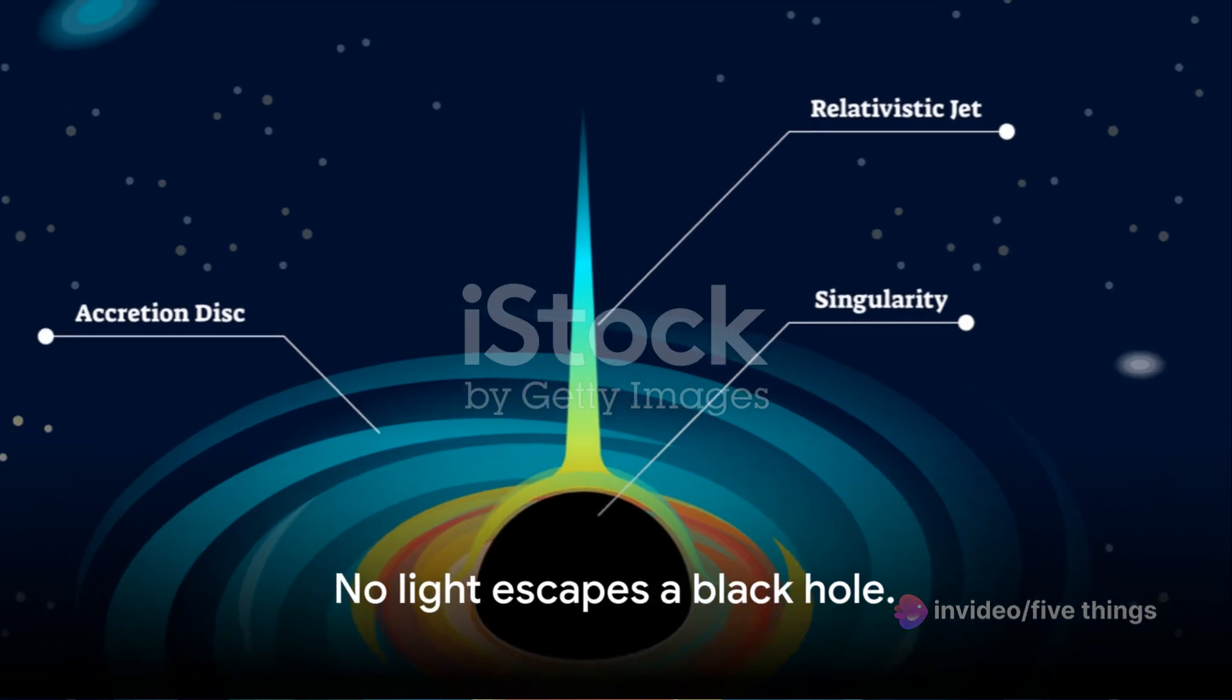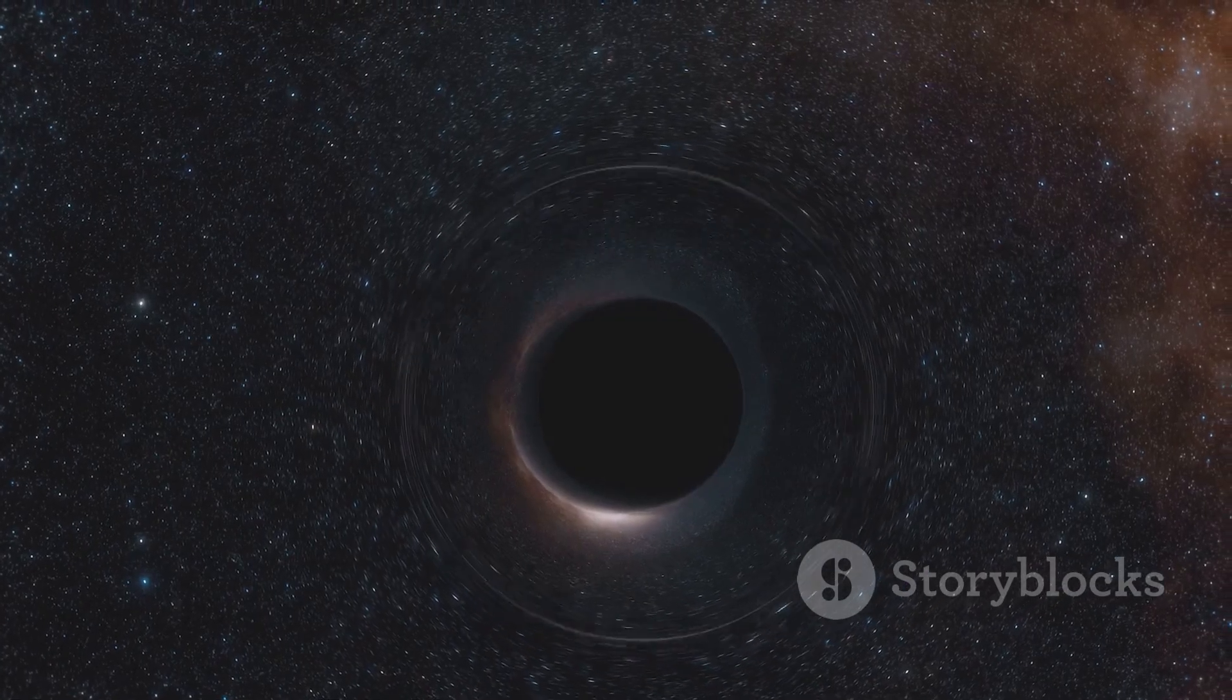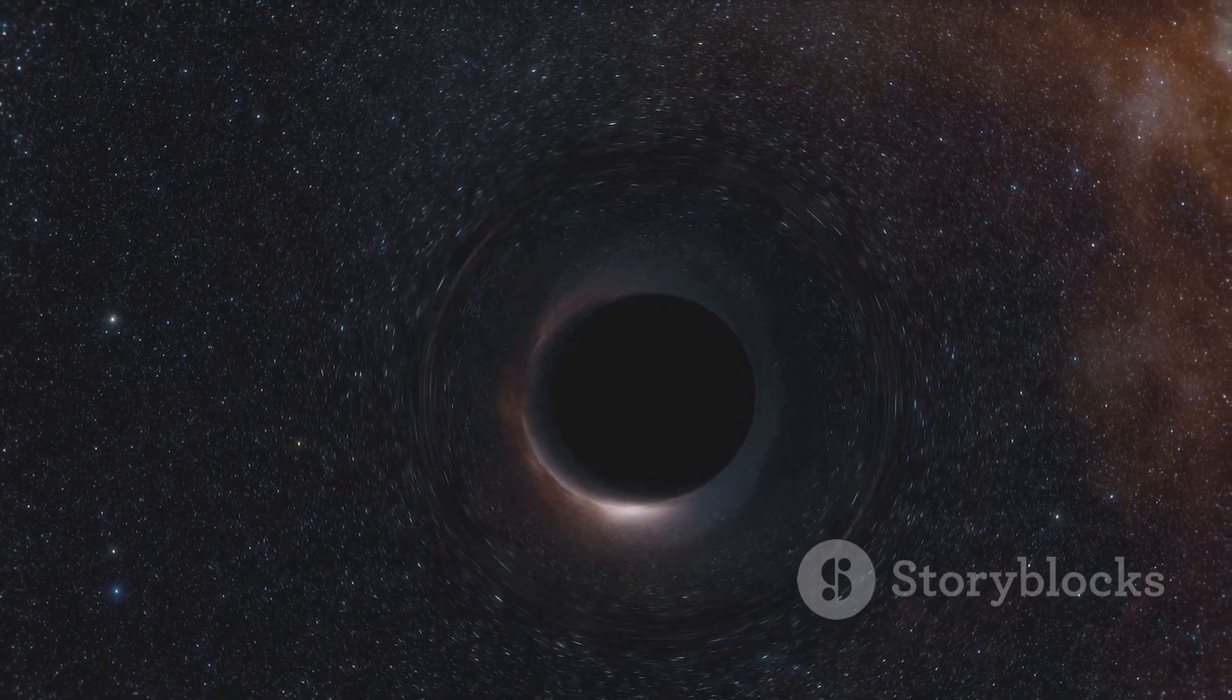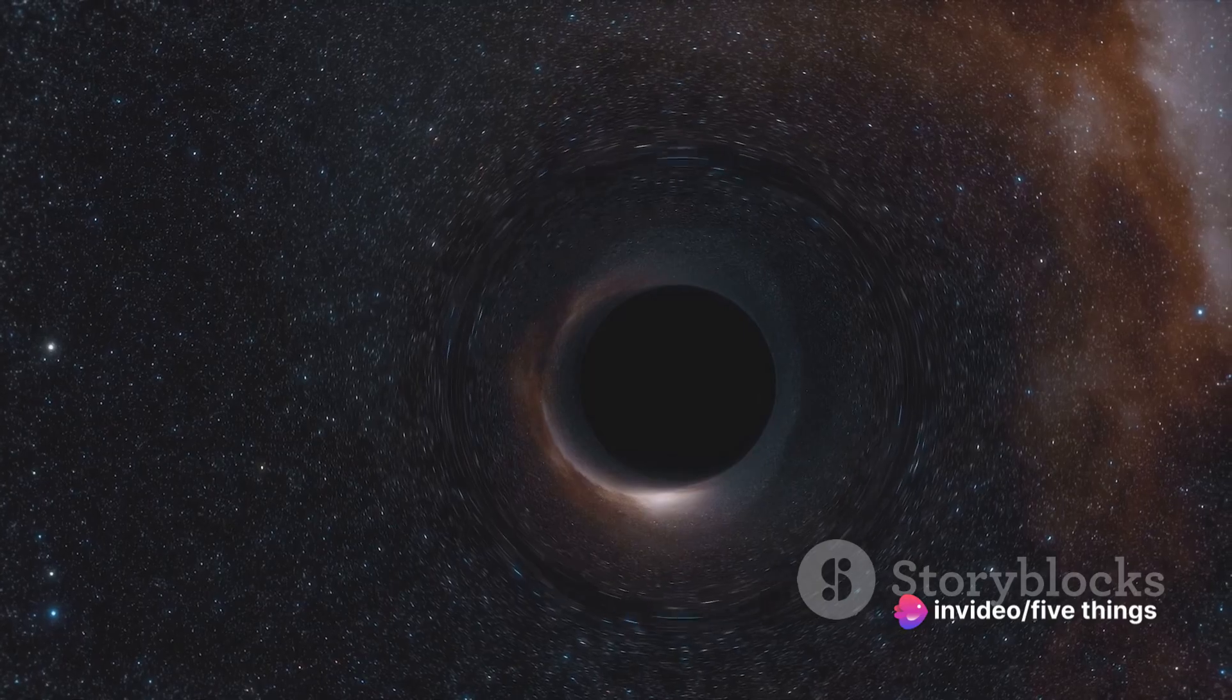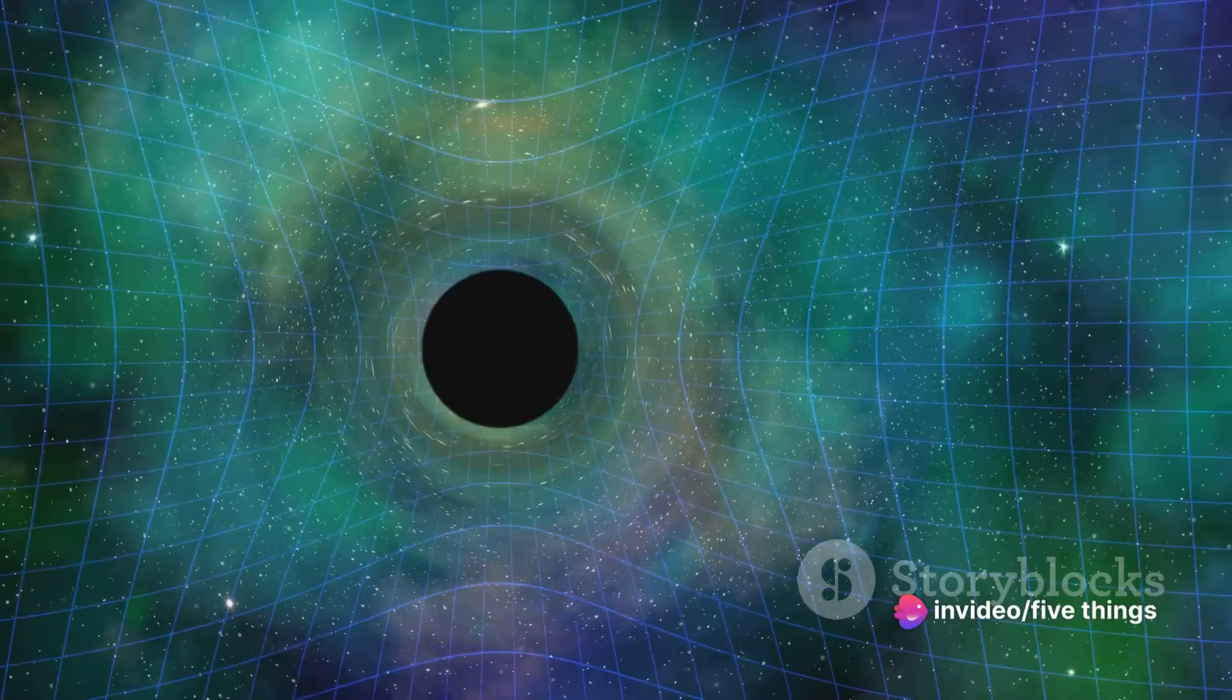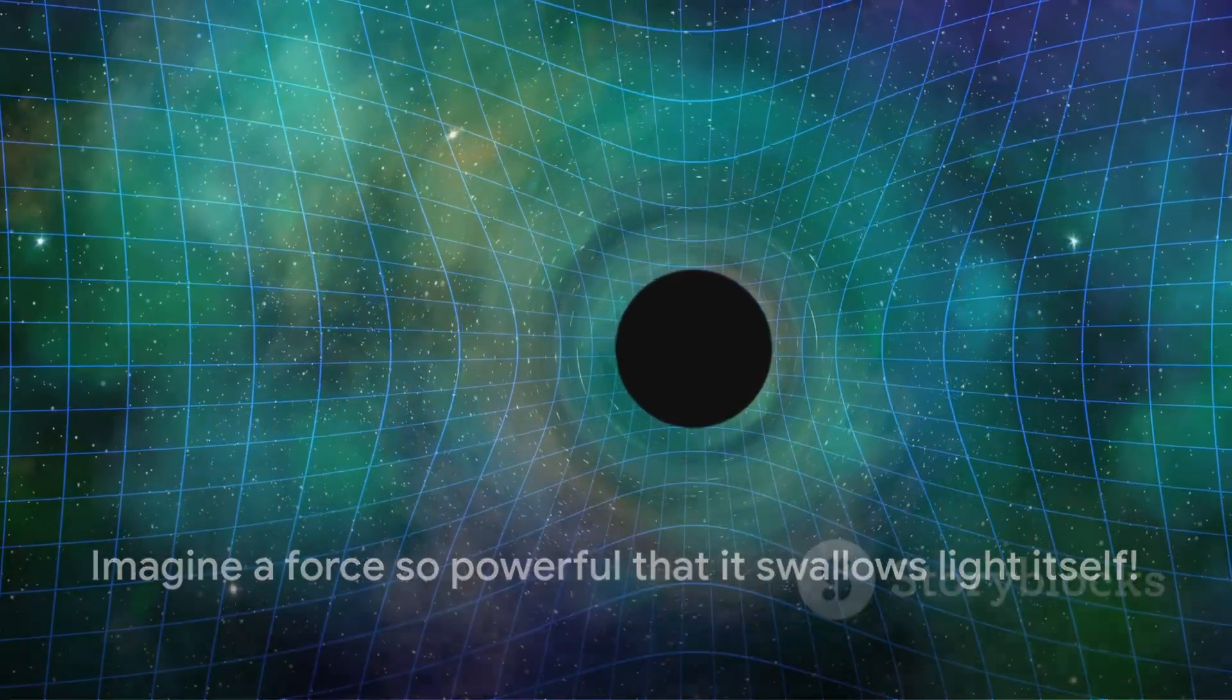We initiate our cosmic journey with fact number five: no light escapes a black hole. Black holes, with their unfathomably powerful gravitational pull, render even the fastest thing in the universe—light—utterly helpless, making them invisible. Imagine a force so powerful that it swallows light itself.